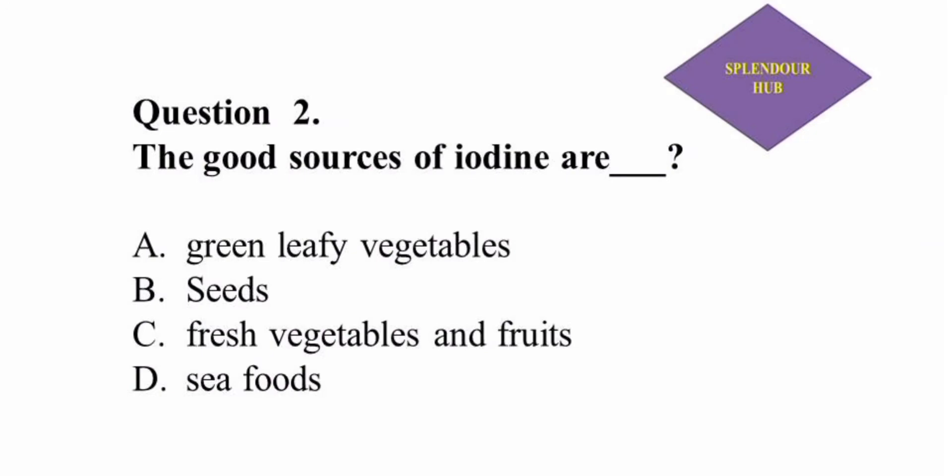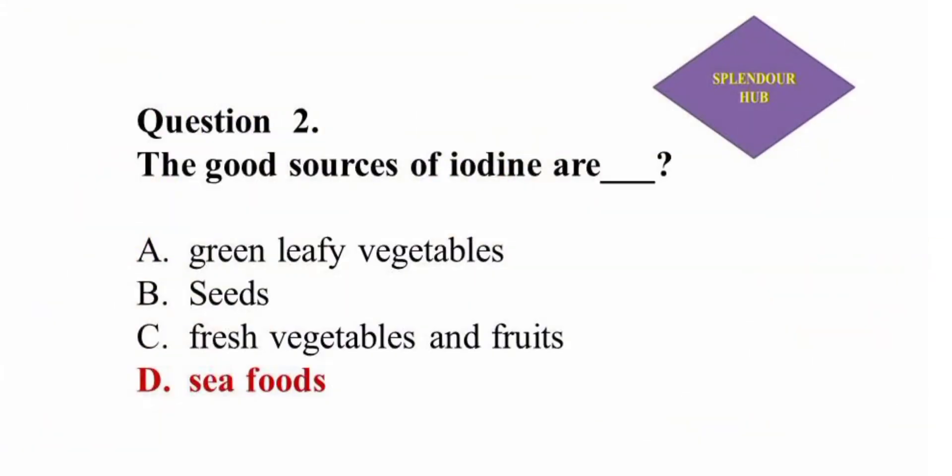Question 2: The good source of iodine are — option A: green leafy vegetables, option B: seeds, option C: fresh vegetables and fruits, option D: seafoods. Answer: The good source of iodine are seafoods.